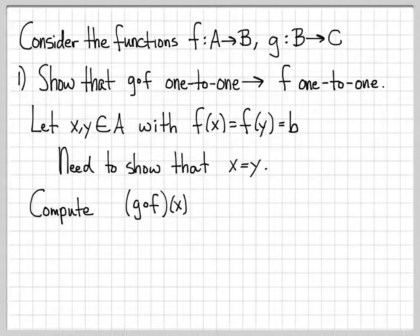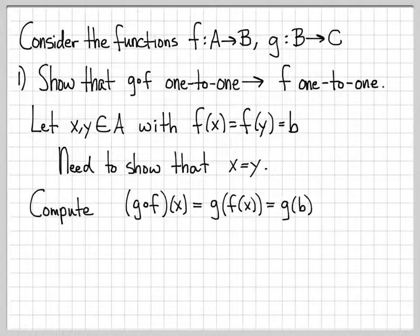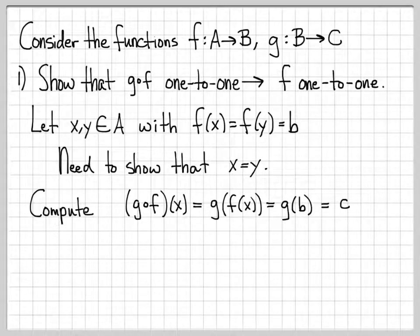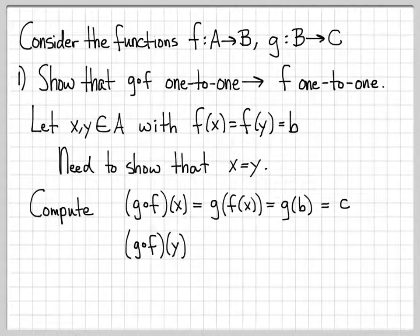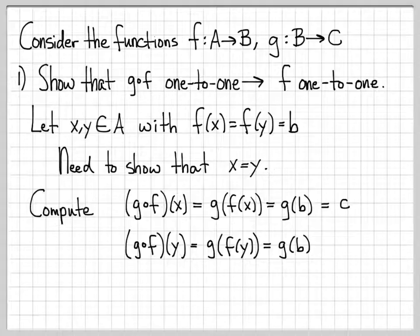Let's do a little computation. g composed of f of x, by definition, means take the g function and evaluate it at the point f(x). This f(x) number is something we were calling b, so really what we're computing is g(b). And since g goes from B to C, g(b) is an element of capital C — let's call it little c. I can also compute g∘f(y): by definition, that means g evaluated at f(y). But f(x) = f(y), so f(y) is just b again, and g(b) is the same c.